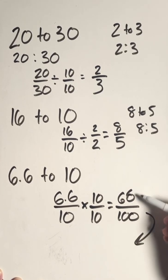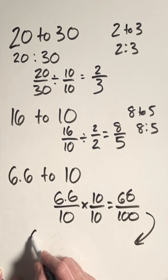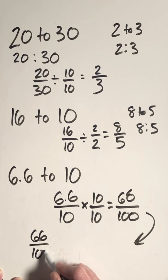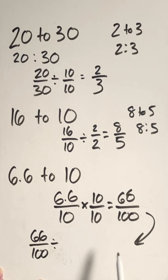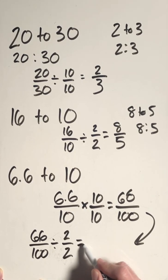Note that this fraction, 66/100, can be simplified by the same process. So once I have 66 over 100, I'm going to divide that fraction by some version of 1 that includes the greatest common factor between 66 and 100, and that would be 2/2, which is equal to 1.